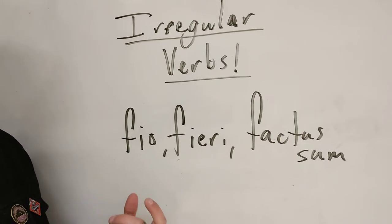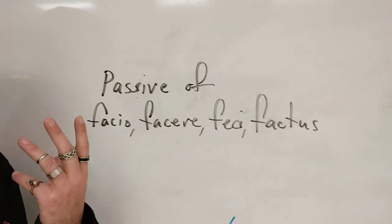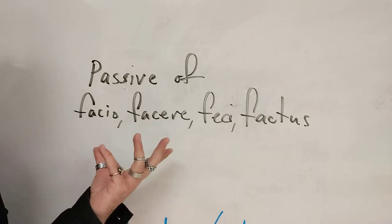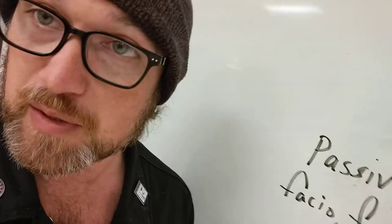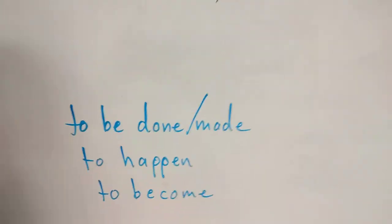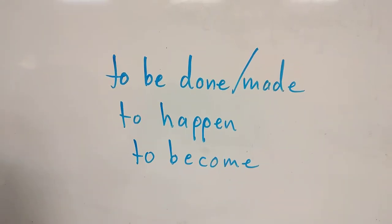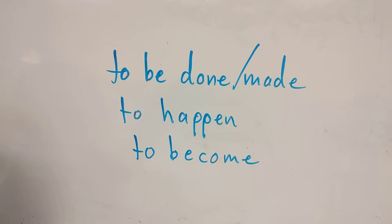They're going to use this verb instead of putting passive endings on facio, this verb which is technically not irregular but it is when it becomes passive. When you translate fio, you could translate it literally as the passive of facio. Facio means to make or to do.